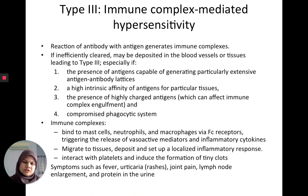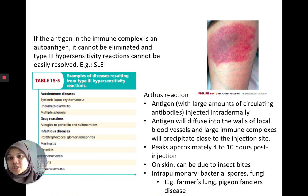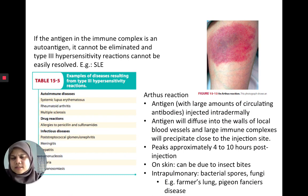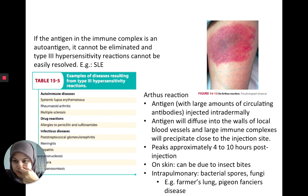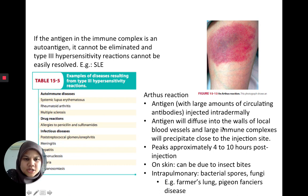Symptoms include fever, urticaria, joint pain, lymph node enlargement, and protein in the urine. If the antigen in the immune complex is an autoantigen that can't be eliminated, it becomes a type 3 hypersensitivity that cannot be easily resolved. Examples include systemic lupus erythematosus (SLE), as well as other autoimmune diseases like multiple sclerosis and rheumatoid arthritis, which will be covered in the next lecture.